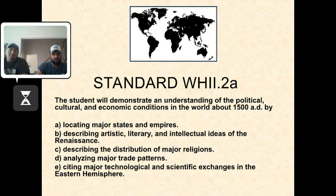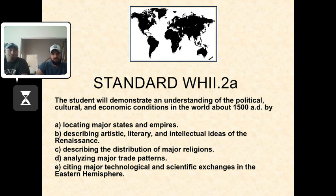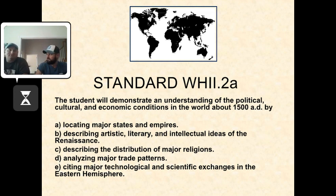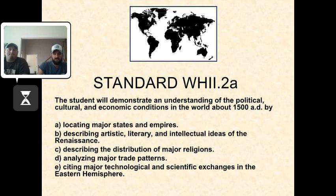So this is your World History 2 SOL 2. Mr. Anderson and I are starting from the top with World History 2. This is the world around 1500, the beginning of modernity. We're going to look at some major states — a state is a concept that's a place with borders, a government, and population — and empires. We're going to describe art, literature, and ideas of the Renaissance. What is the word Renaissance? Rebirth. Rebirth of what? Roman culture — the classics — but with a little modern twist called humanism. We're going to describe the major religions in the world of 1500, look at trade, and look at major technological and scientific exchanges — things that were brought east to west.